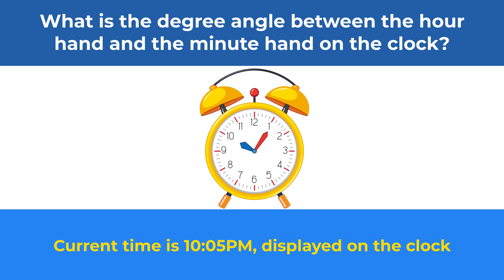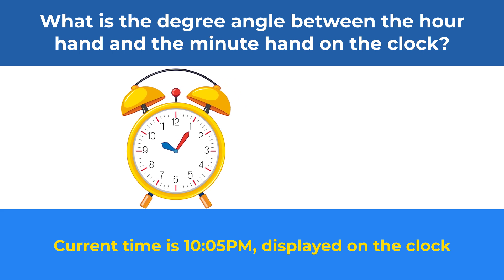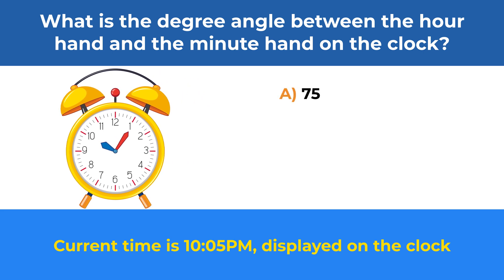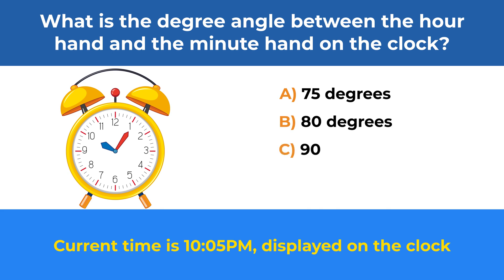You have four different choices: Choice A – 75 degrees, Choice B – 80 degrees, Choice C – 90 degrees, and Choice D – 100 degrees.